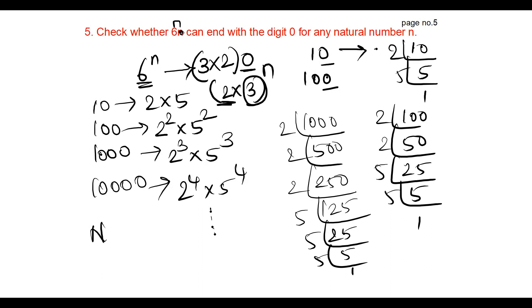So if n can be any natural number, 6^n will not end with the digit 0.